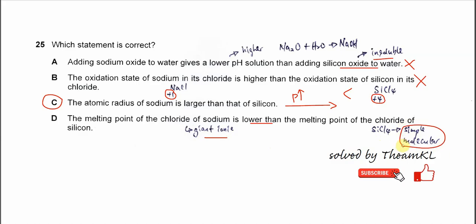There are van der Waals forces between the molecules. Therefore, SiCl4 has a lower melting point compared to NaCl. So therefore this statement is wrong. The answer confirmed is C. That's all. Thank you.